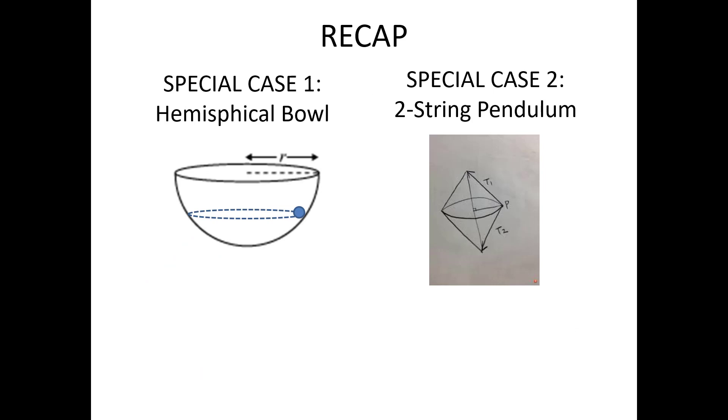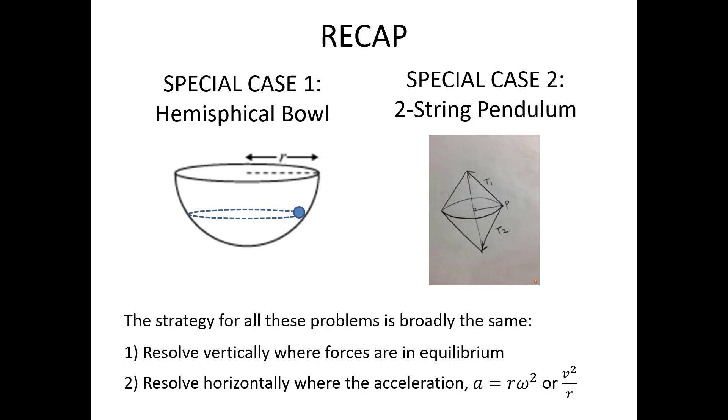So to recap, these are the two special cases we've looked at today. The hemispherical bowl, which is a bit like a banked track without friction. And the two-string pendulum, which is a bit like a banked track with friction. There are lots of other special cases, but the strategy is always the same.